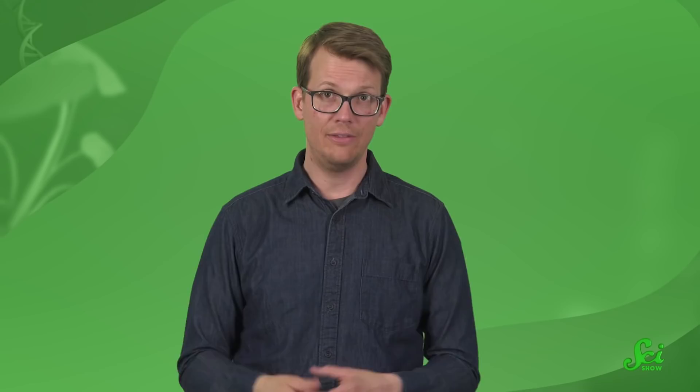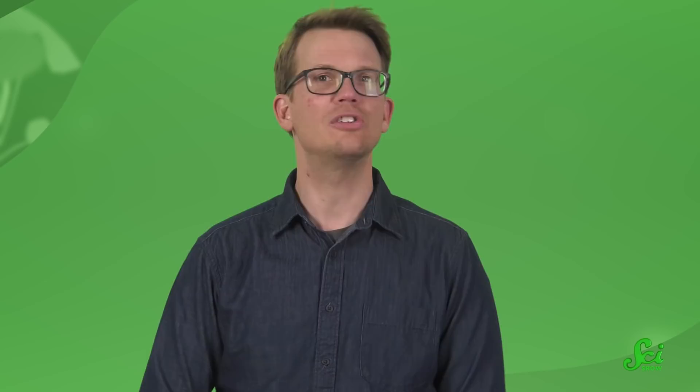One way to classify them is by how many crossings a given knot has. That is, how many times the string passes over or under itself. Some knots look really complicated, but can actually be untangled to look much simpler. The key is to find the minimum number of crossings inherent in a given arrangement. The simplest kind of knot is actually something most of us wouldn't consider a knot at all — just a closed loop with no crossings. Mathematicians call it the trivial knot, or the unknot. You might also know it as a circle.